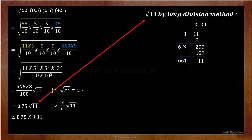That's why we have taken 0.75 multiplied by 3.31, and the approximate value we came across is 2.4825 centimetre square. I hope you are clear with the calculation part.